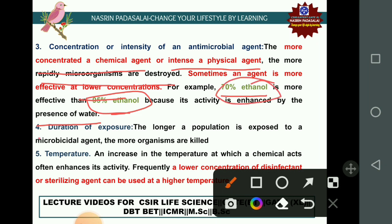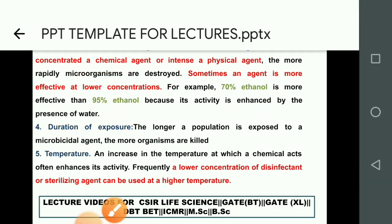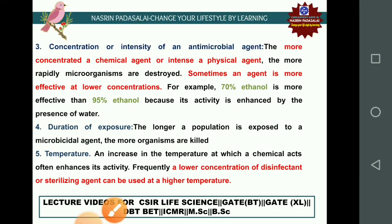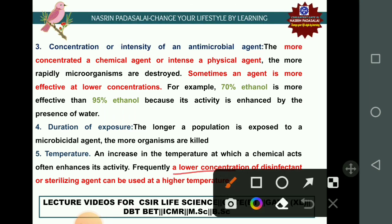The next factor is duration of exposure — the longer a population is exposed to an antimicrobial agent, the more organisms are killed. The last factor is temperature. An increase in temperature often enhances the activity of a chemical agent. When employing a lower concentration of disinfectant, you can compensate with higher temperature, which is efficient for killing microorganisms.